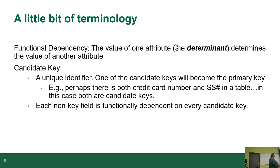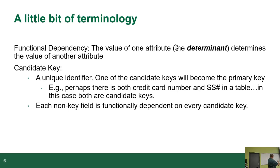A functional dependency is when the value of one attribute determines the value of another attribute. For example, with a student record that has a student number, a name, and an address — the student's name and address depends on the student number. In other words, the student number determines the name and address of the student. Every student has a student number, and that number will determine the rest of their attributes. The student's name is fully functionally dependent on the identifier, the determinant. That's a functional dependency.